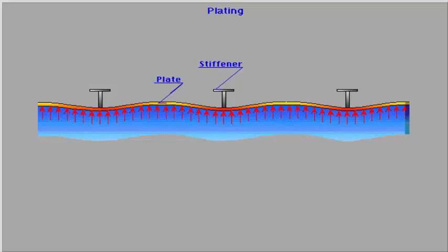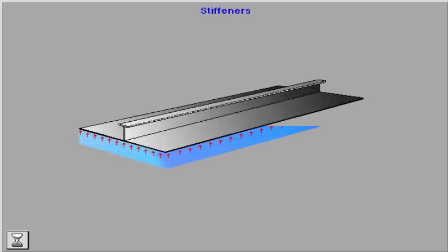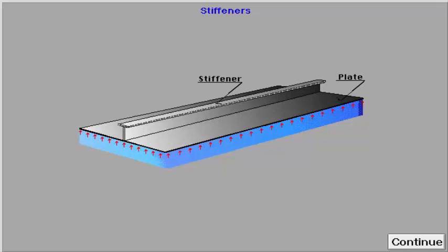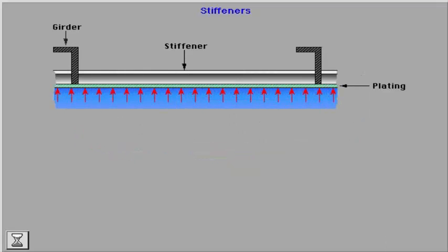Each of the two supporting stiffeners takes half of the forces transferred from a strip of the plating. All forces apart from the forces transferred directly to the girder are taken up by the stiffeners. Each stiffener functions as a single beam with fixed ends and uniformly loaded by the forces transferred through the plating.